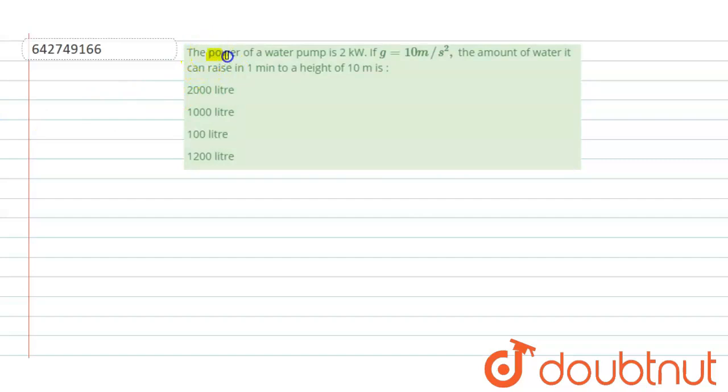Hello students, the question is: the power of a water pump is 2 kilowatt. If g is 10 meter per second square, then the amount of water it can raise in one minute to a height of 10 meter is what?